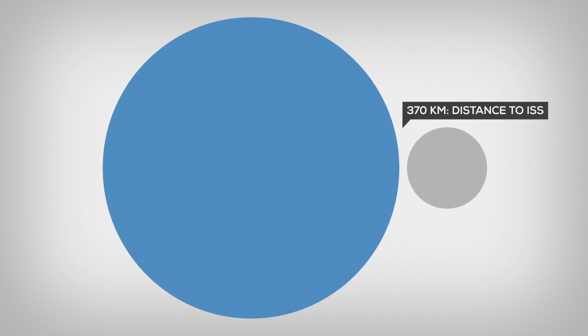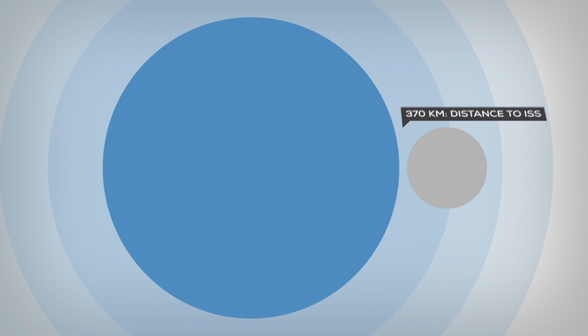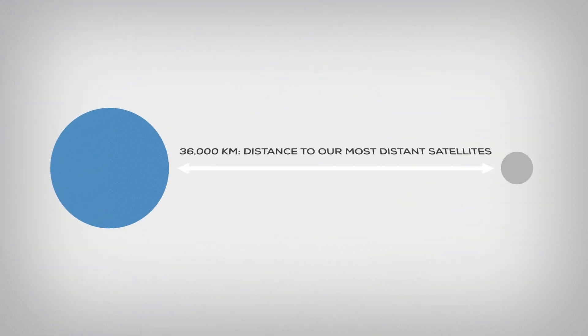370 kilometers, as far as the ISS maybe? No, at that distance, gravitational forces would rip the Moon apart. At 36,000 kilometers, it would be as far away as our most distant satellites.